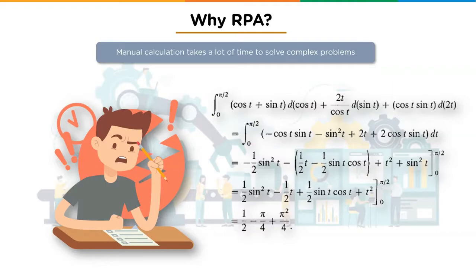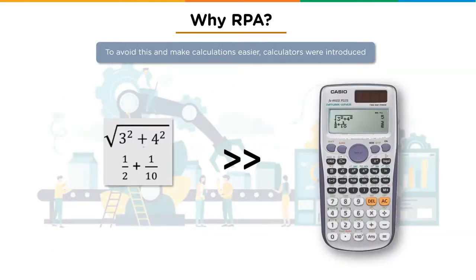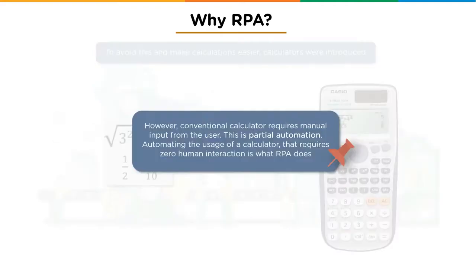Imagine having to solve complex mathematical problems manually — it's possible but not easy. To make life easier, calculators were invented. They proved to be accurate, easy, and time-saving. However, conventional calculators still need human input, making them partial automation. So does a calculator qualify under the RPA framework? No.